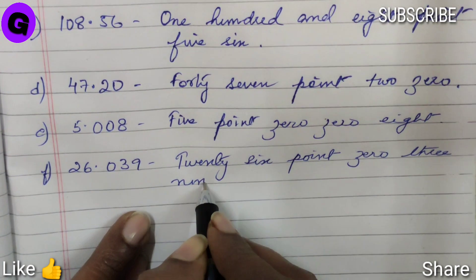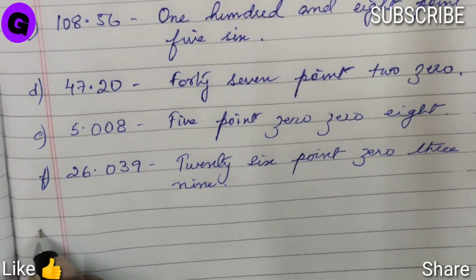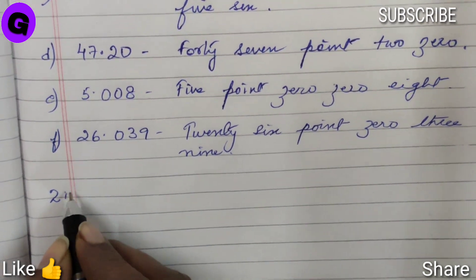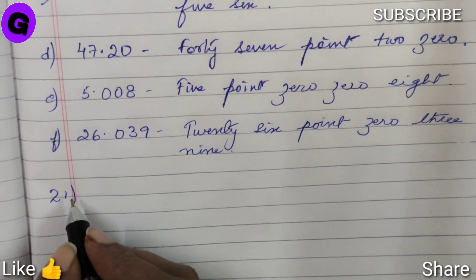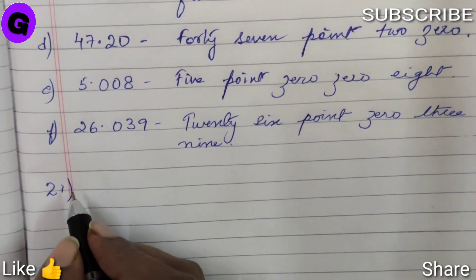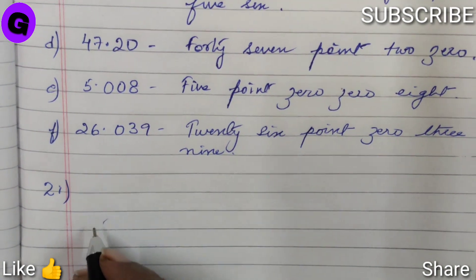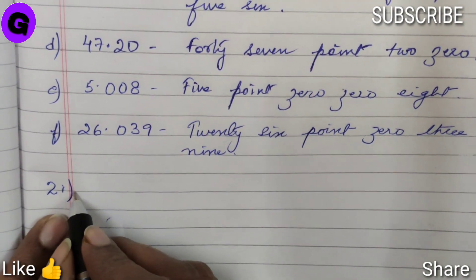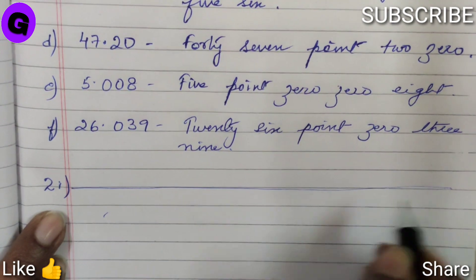Now question number 2. Now we have to show each of the decimal numbers in the place value chart. So for that we need to draw a place value table.